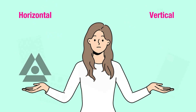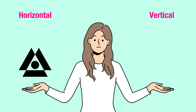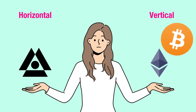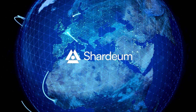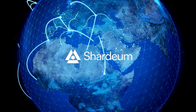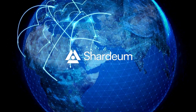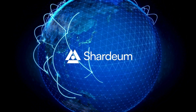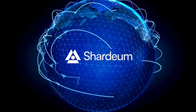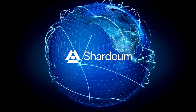Besides Shardium, nearly every major layer 1 relies heavily on this method. So why is Shardium focusing on horizontal rather than vertical scaling? Let's explore the benefits. By distributing operations across many nodes, Shardium ensures no single node dominates, maintaining true decentralization.